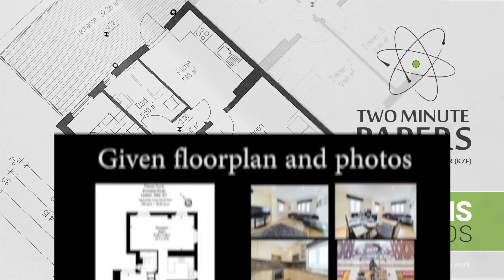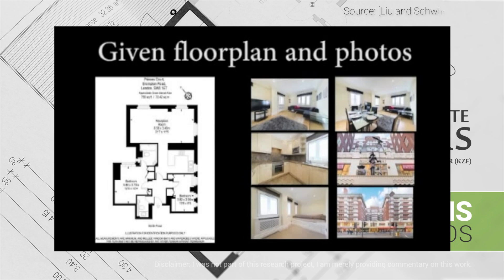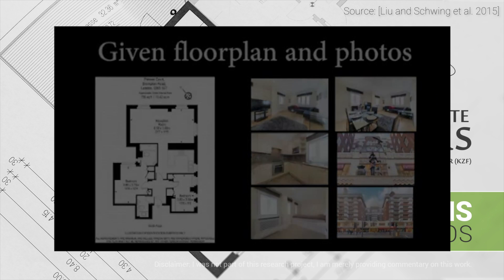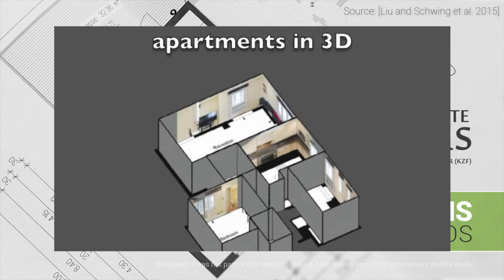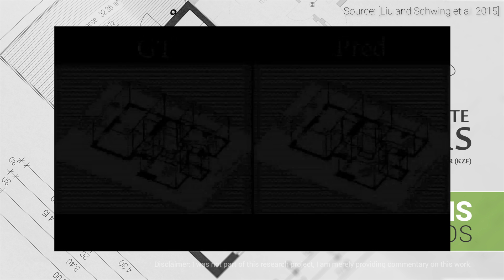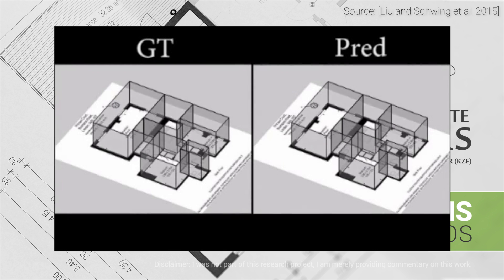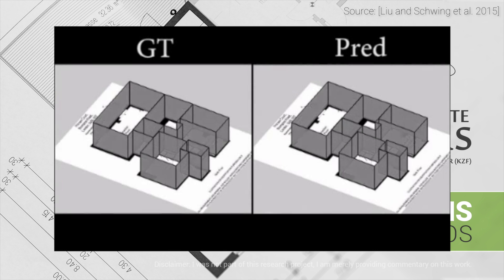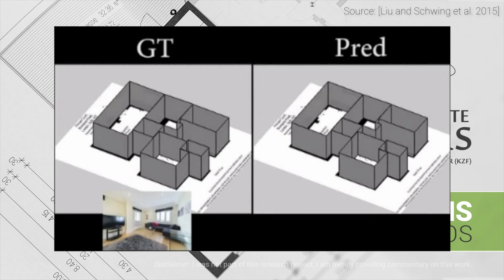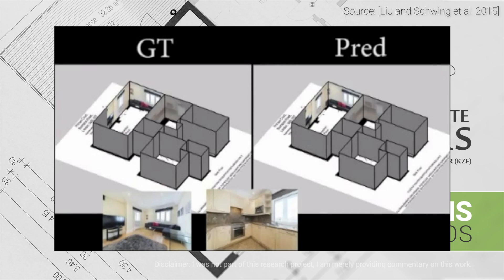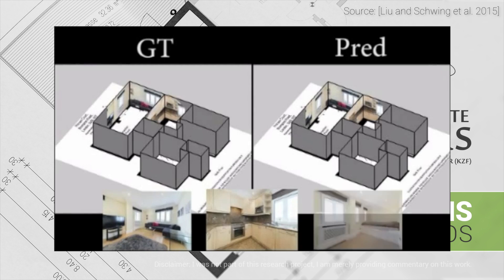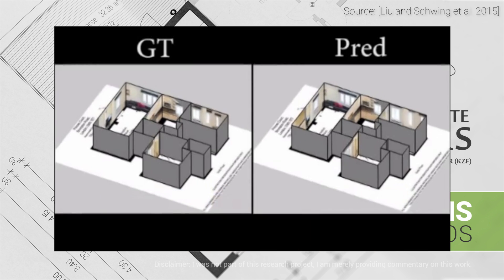In this piece of work, we are interested in creating a 3D virtual tour for an apartment. However, for this apartment, no 3D information is available. Instead, the input for the algorithm is something that we can obtain easily — in this case, a 2D floor plan and a set of images that we shot in the apartment.